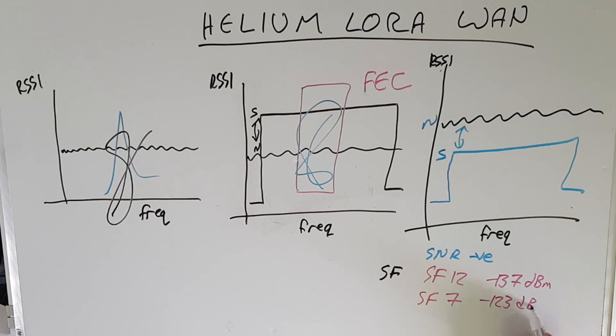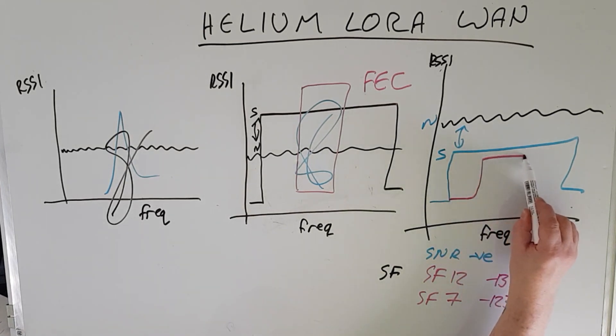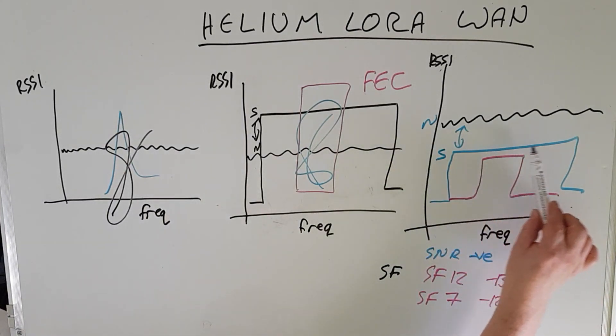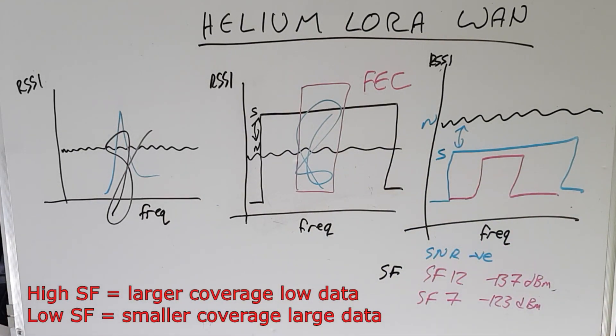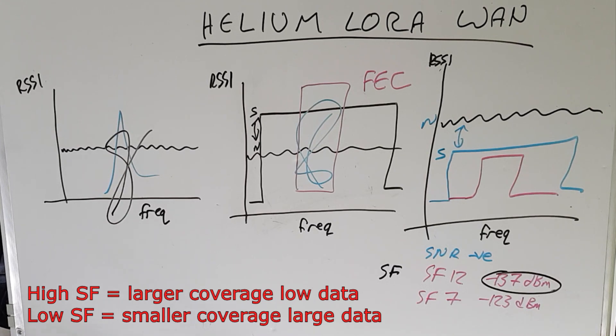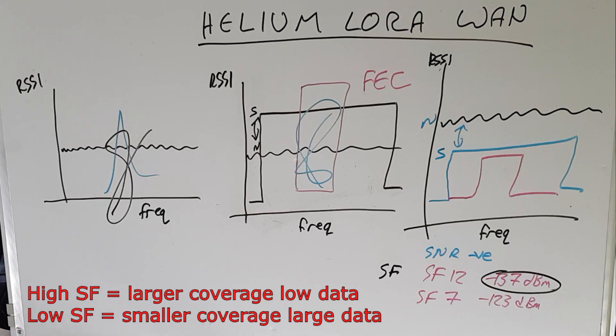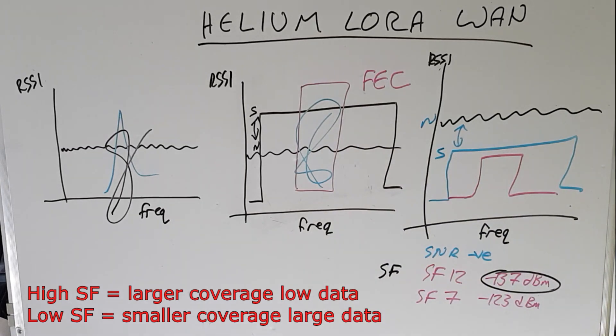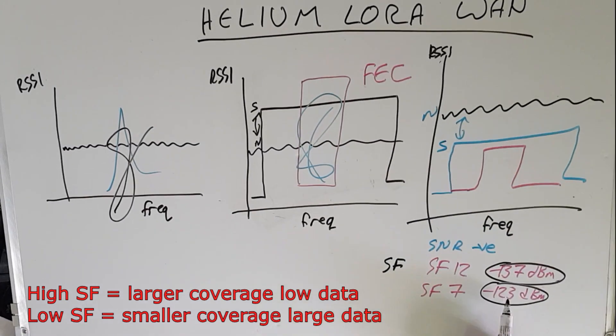So spreading factor 7 means we don't spread it as much, maybe something like this. Now the benefits of that larger spreading factor are a larger area of coverage because of that better received sensitivity, but the downside is that the data rate is a lot smaller. You can send a lot less information for a given amount of time. On the other hand, spreading factor 7 gets you a higher data rate but at the expense of lower coverage area, again because of that lower receive sensitivity.